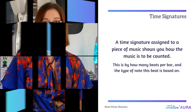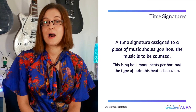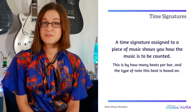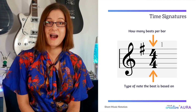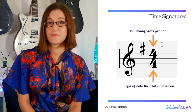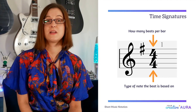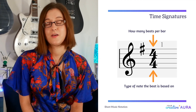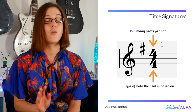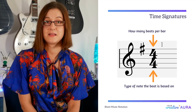Time signature. A time signature shows you how the music is to be counted — by how many beats per bar and the type of note this beat is based on. A time signature will appear at the beginning of the staff after the key signature. The number on top represents the beats per bar, which is the driving beat to the song that we'll usually clap or dance to naturally. The most common beats per bar is four beats: one, two, three, four.